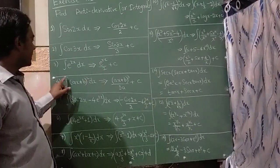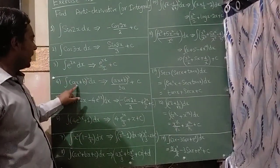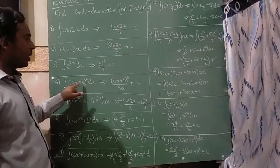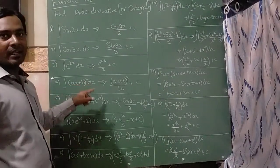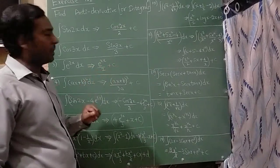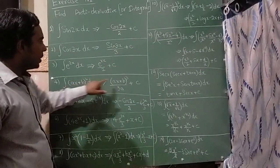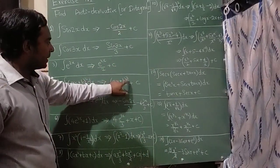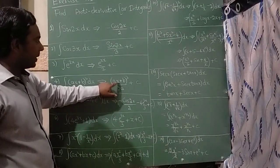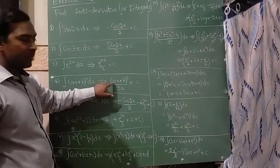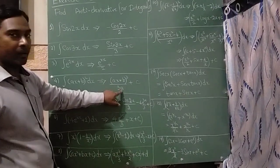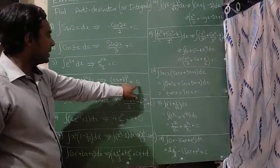The fourth question is integration of (ax plus b) whole square dx. The formula is x raise to n gives x raise to n plus 1 divided by n plus 1. Here n is 2, so it becomes 3 divided by 3. Since the variable has a coefficient a, I have written a in the denominator, plus c.